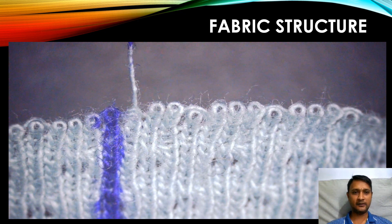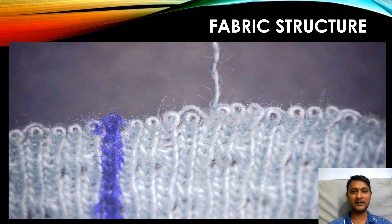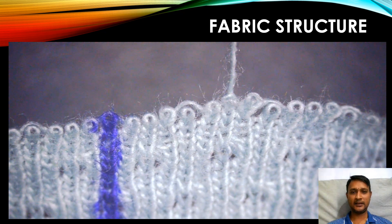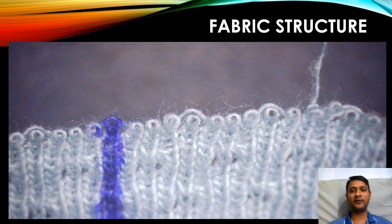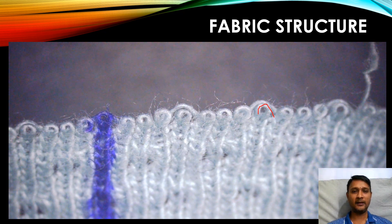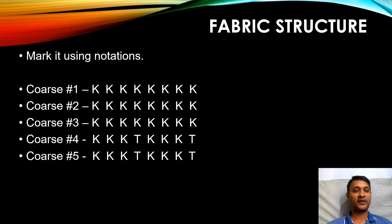After that vertical line: tuck, knit, knit, knit — the fourth needle is tuck again, then knit knit knit again. The same as course number four is getting repeated — in the fourth and eighth needles we found that tuck structure, the half-moon unraveling. So course numbers four and five are the same: three knit followed by tuck, and again three knit followed by tuck.